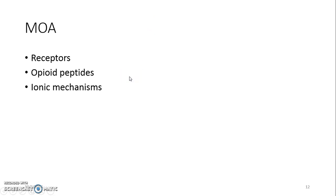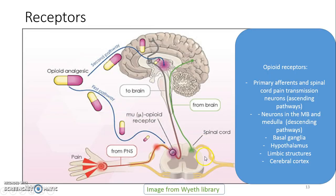When we talk about the mechanism of action of opioids, we can discuss it in terms of the receptors, opiate peptides, and ionic mechanisms. From this image from the White Library, you can see that there are receptors along the descending pathways, in the midbrain, in the medulla, the basal ganglia, hypothalamus, and also in the cerebral cortex.